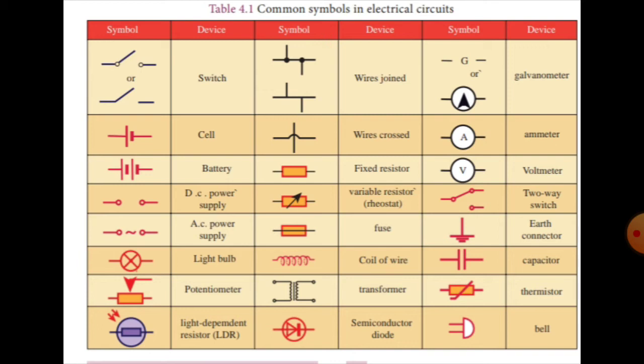There is a cell. One cell is connected - the longer line is positive and the shorter line is negative. This is one cell. When more cells are connected together, they form a battery. For example, cells of 1 volt connected together give 2 volts.